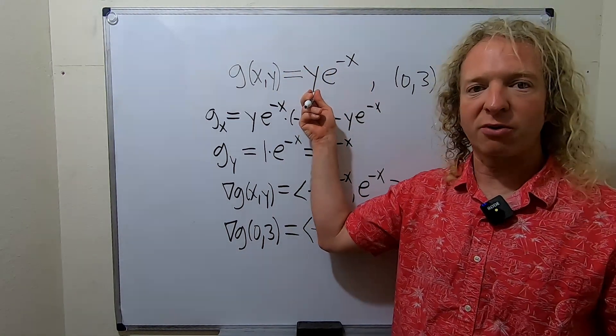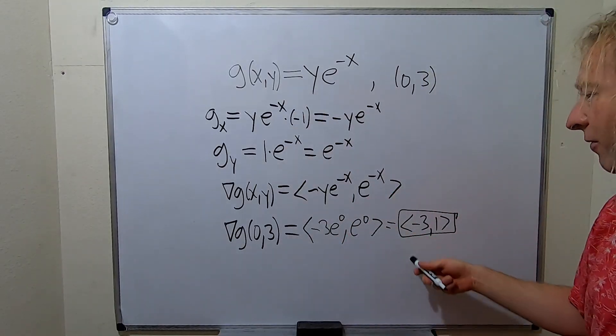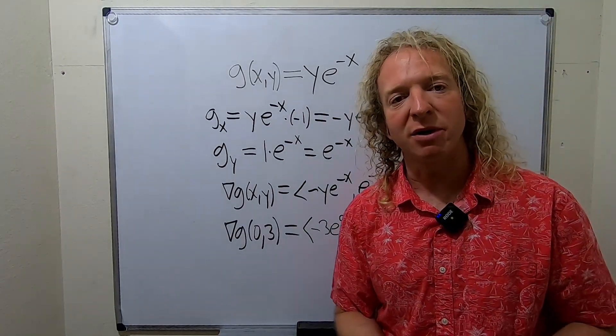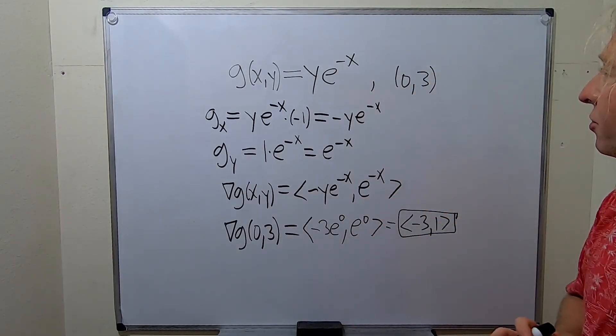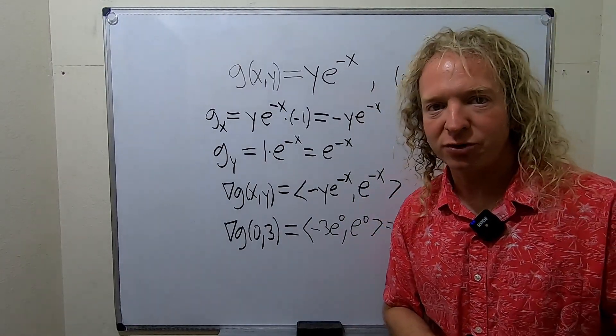Remember this is a three-dimensional graph. The gradient is a two-dimensional vector. It points in the direction of maximum increase. So now we have to find the maximum value of the directional derivative.